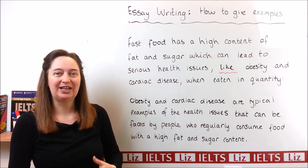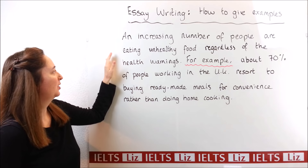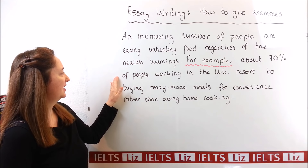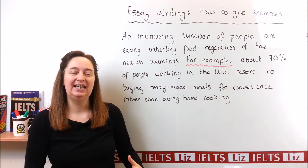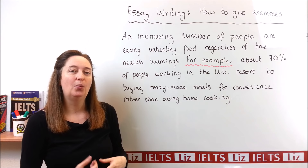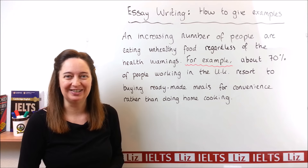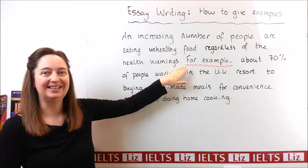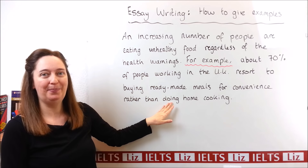Now let's look at more ways to give examples. Another way: 'An increasing number of people are eating unhealthy food regardless of the health warnings. For example, about 70% of people working in the UK resort to buying ready-made meals for convenience rather than doing home cooking.' Here, rather than giving an example to explain a single word, we're giving a whole sentence as an example, which will often contain statistics — but not always. The linking device used is 'for example,' followed by a comma before the example sentence.